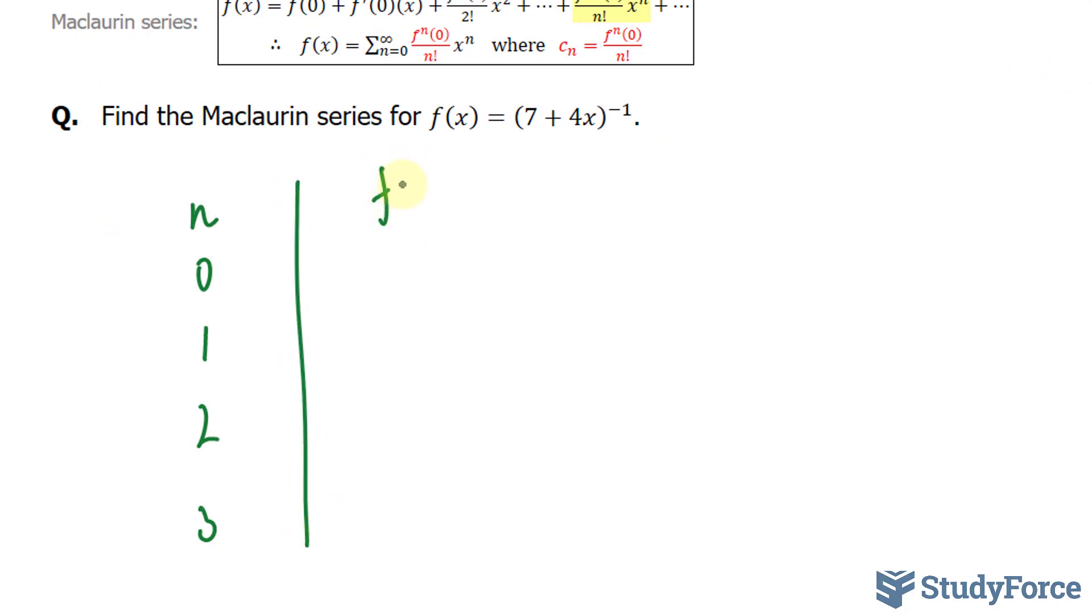So when n is equal to zero, in other words, the derivative of this function has not been taken, our function looks like this, 7 plus 4x raised to the power of negative 1.